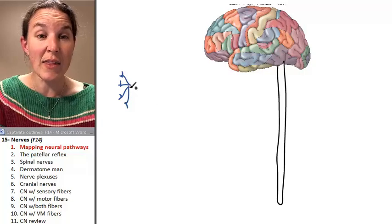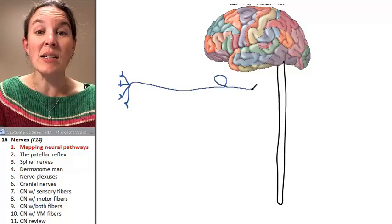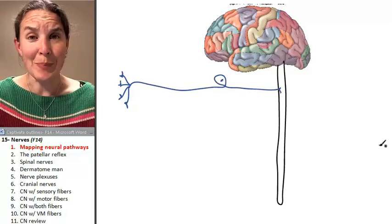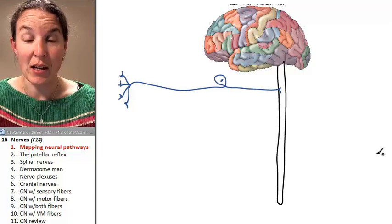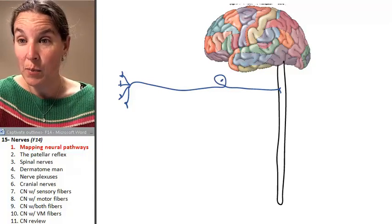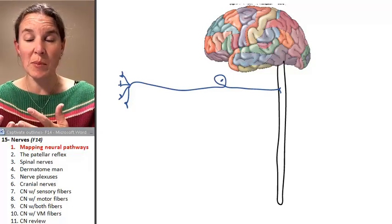And these afferent pathways have sensory receptors on the dendrites that receive some sort of stimulus, send the message to the central nervous system. My spinal cord is really skinny. It's going to be rather difficult to fit my processes in here.